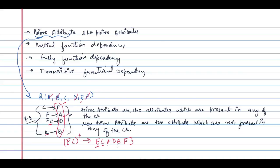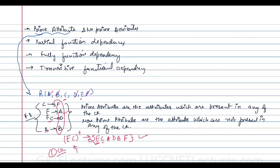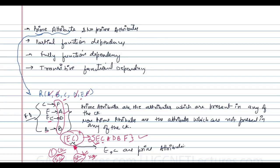Taking the EC closure gives us all attributes, meaning EC is the only candidate key for this relation. If you add anything else to EC, it becomes a super key, not a candidate key. So EC is the candidate key. Therefore, E and C are prime attributes. All other attributes — A, D, B, and F — are non-prime attributes, meaning they are not present in any candidate key of this relation.